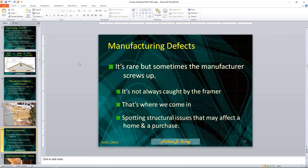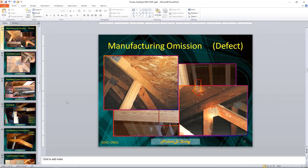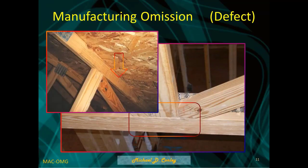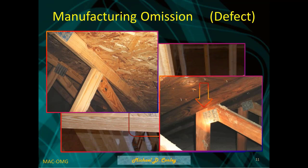Manufacturing defects are also a factor. It's rare, but sometimes the manufacturer screws up the truss, and it's not always caught during framing. Spotting structural issues may affect a home and its purchase. Examples of manufacturing defects include missing or misplaced gang plates — not common, but it does happen, and it affects the ability of the truss to do its job.